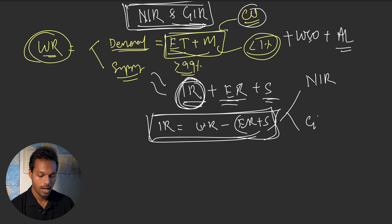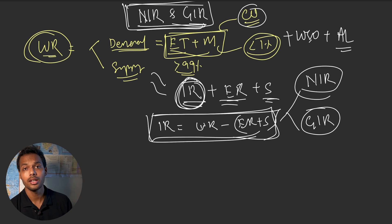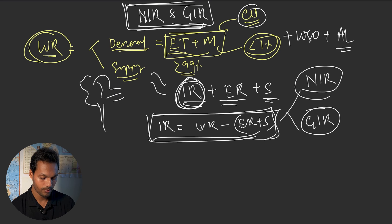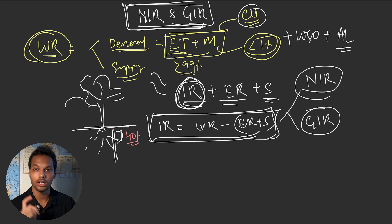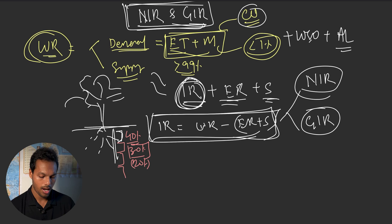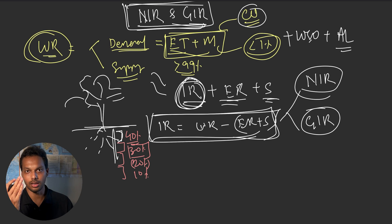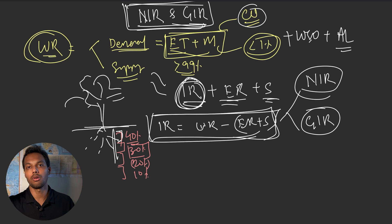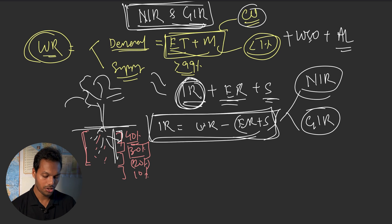Irrigation requirement is of two types: net irrigation requirement and gross irrigation requirement. To understand net irrigation requirement, consider a plant with its root system in the soil. The top 25 percent of the root zone takes up 40 percent of water in consumptive use; the next 25 percent takes up 30 percent; the next 25 percent takes up 20 percent; and the bottom 25 percent takes up 10 percent. This is the moisture extraction pattern of a plant.